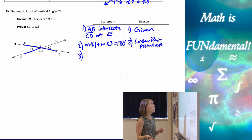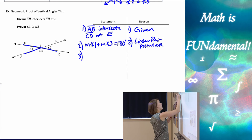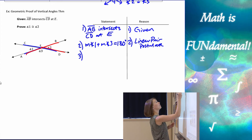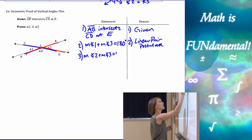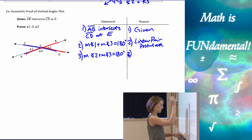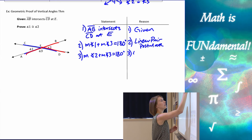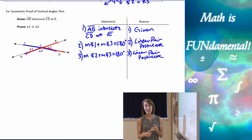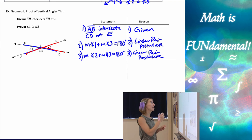Can we use that angle three as a middleman to connect one and two? Angles three and two are also a linear pair. So for step three, we use the same postulate: the measure of angle two plus the measure of angle three equals 180 degrees — Linear Pair Postulate again. Now let's think about our properties: substitution, transitive, reflexive, symmetric, addition, subtraction — all those properties we can pull from for our next step.